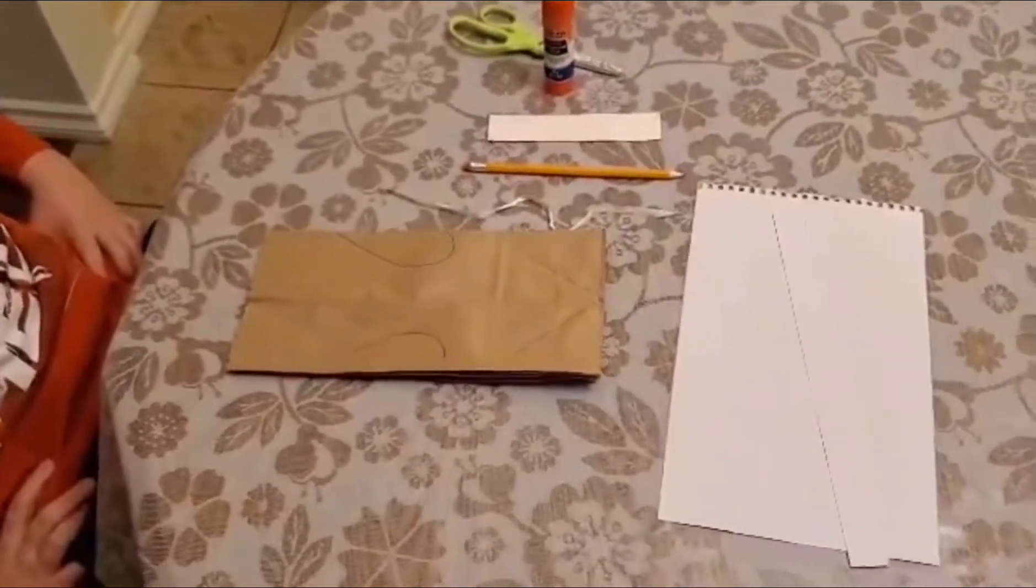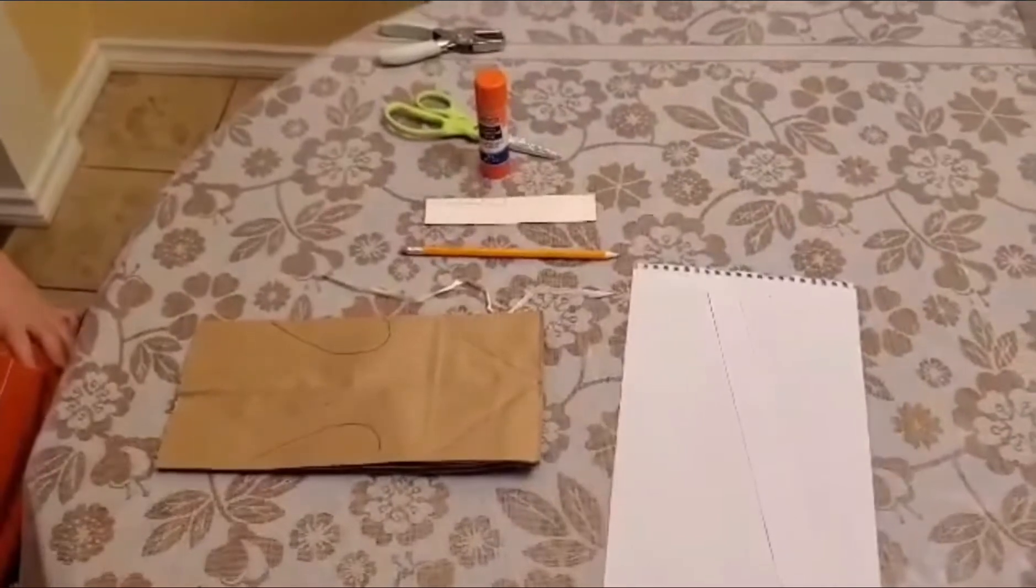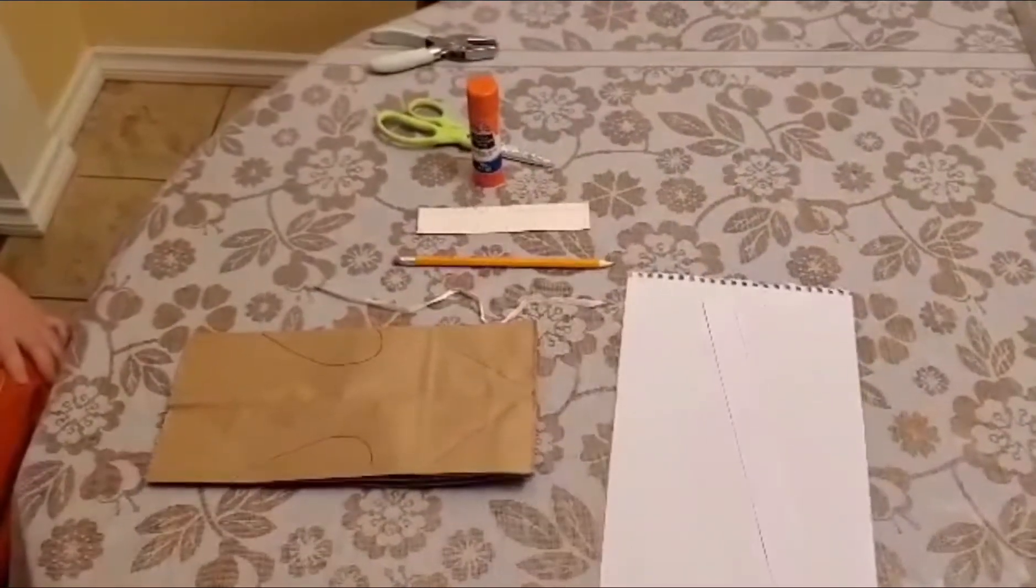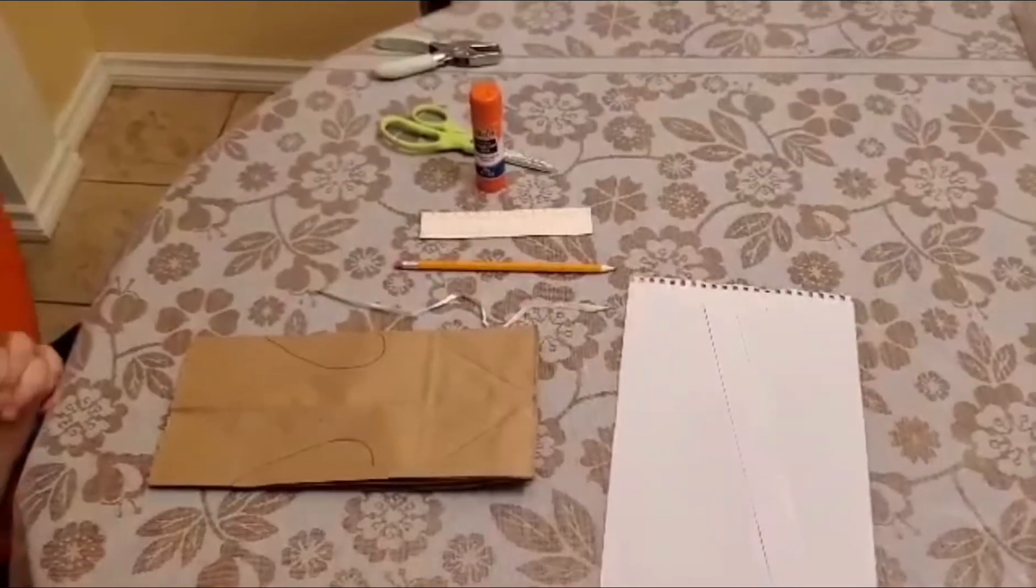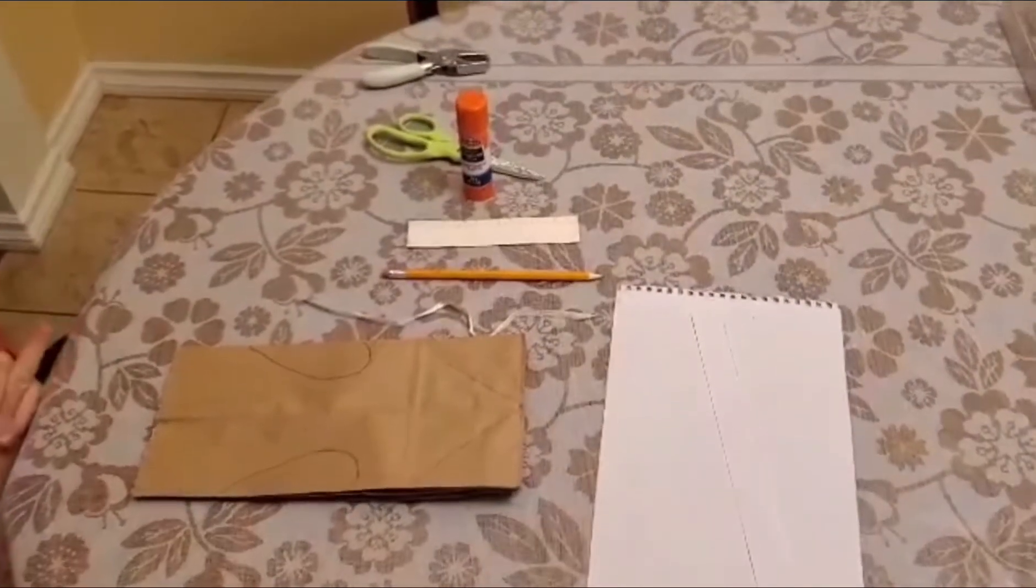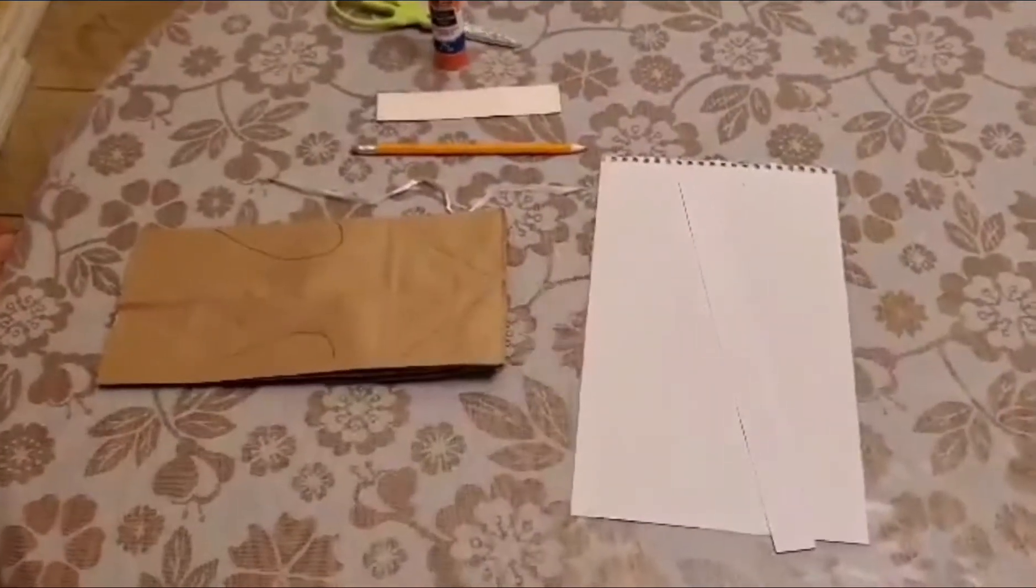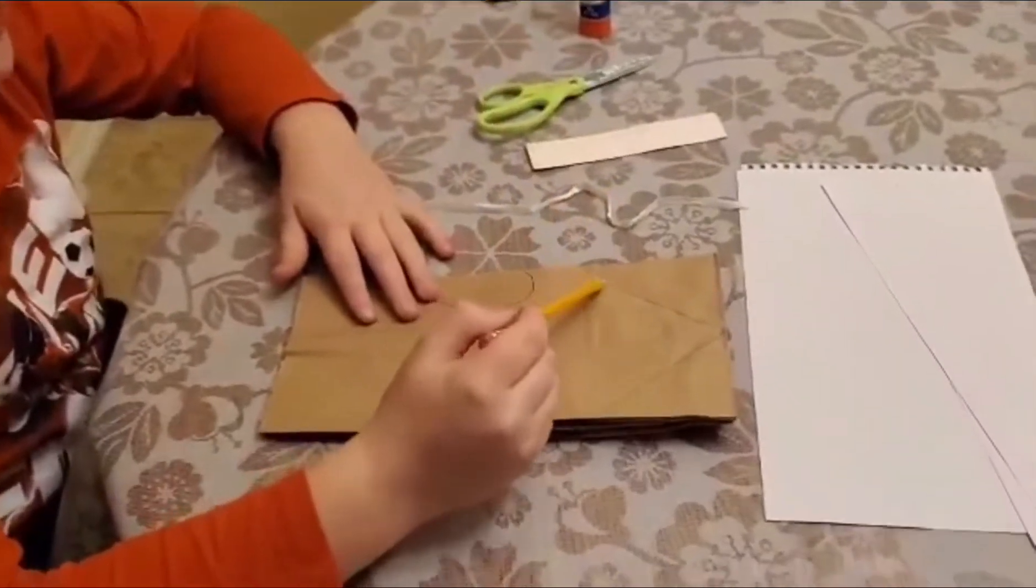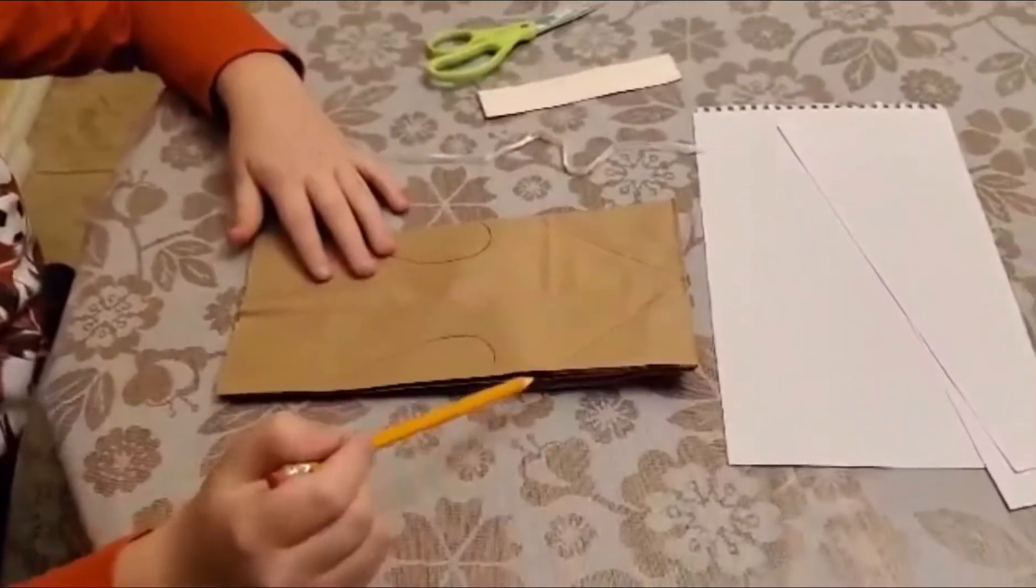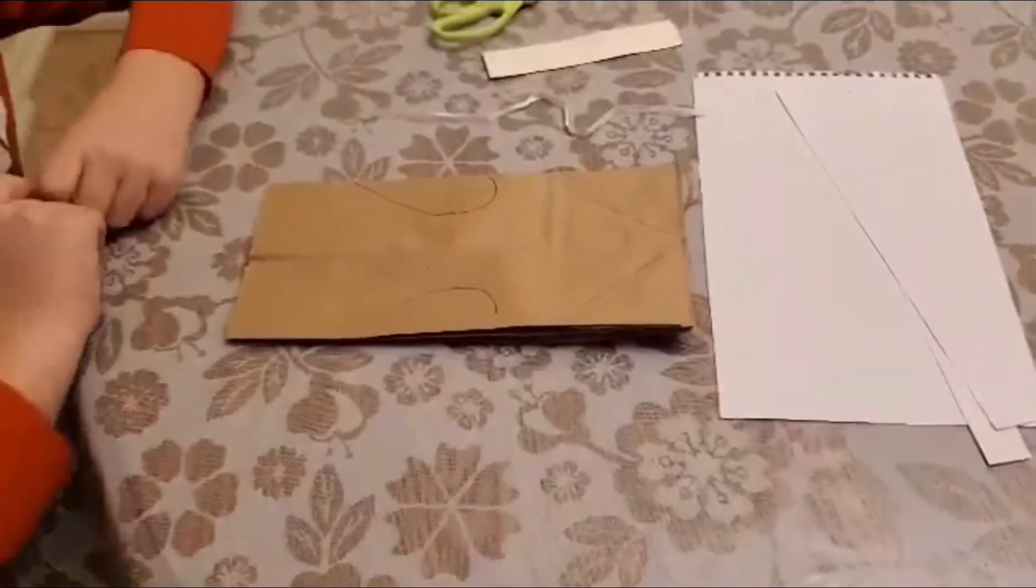You need six lunch bags, a nice string, a pencil, a ruler, a glue stick, scissors, a hole puncher, and paper. You need a pencil to draw a line up and then down, and then after that you need to draw like a heart, half a heart.